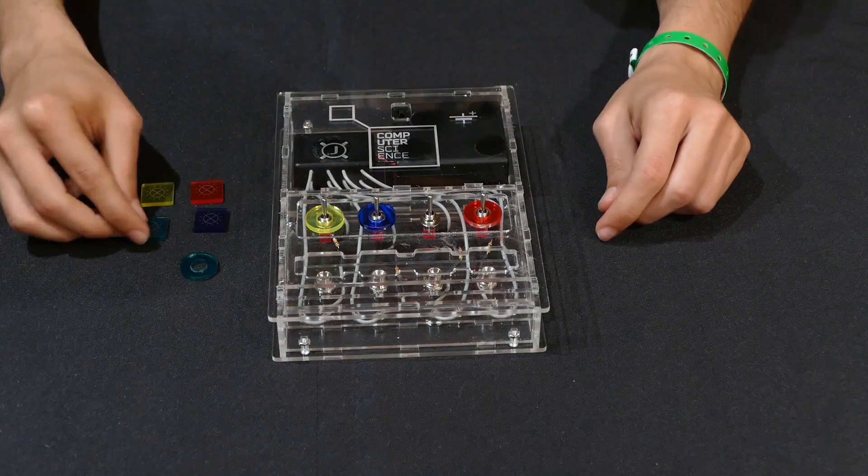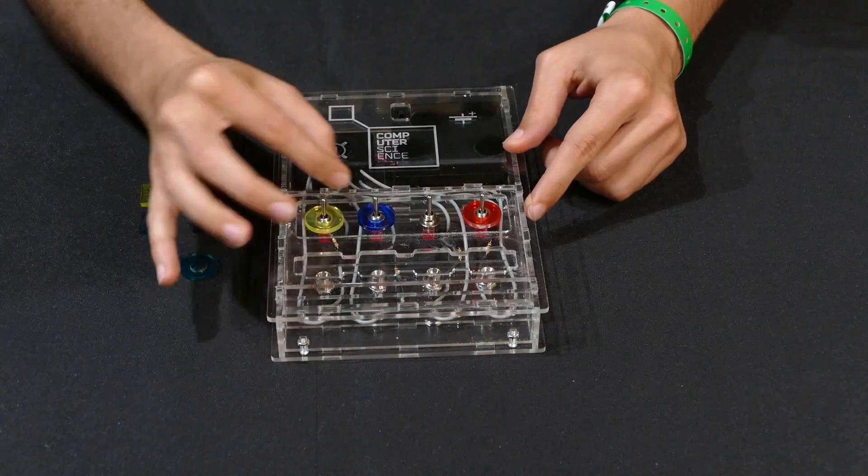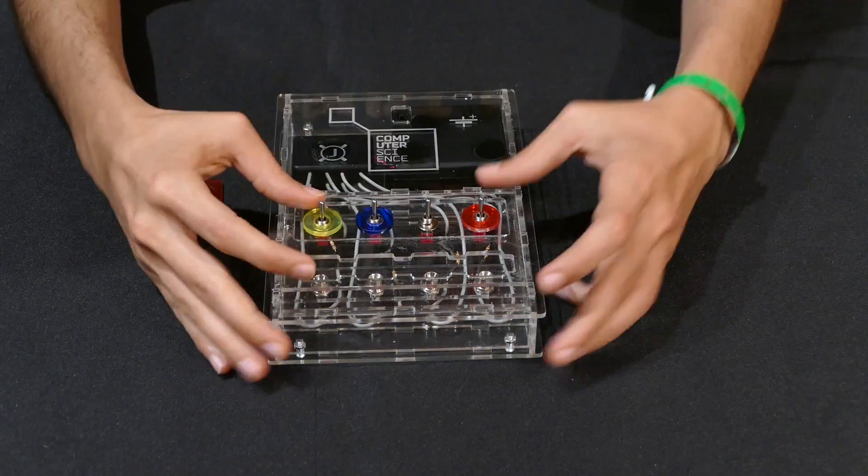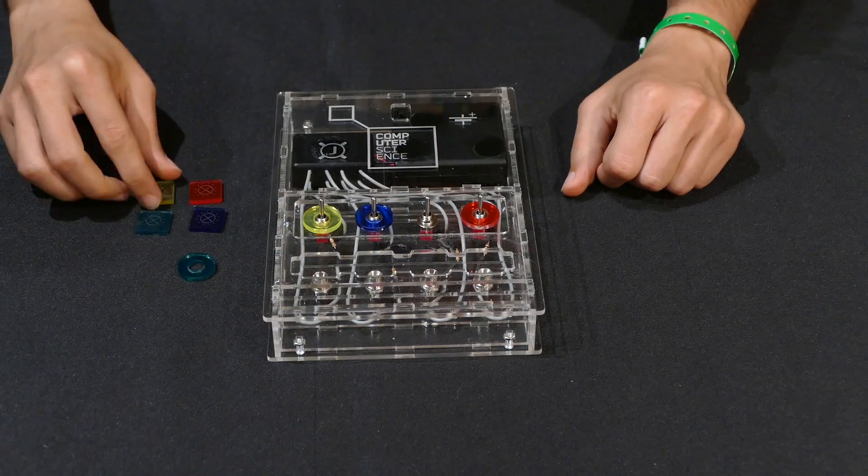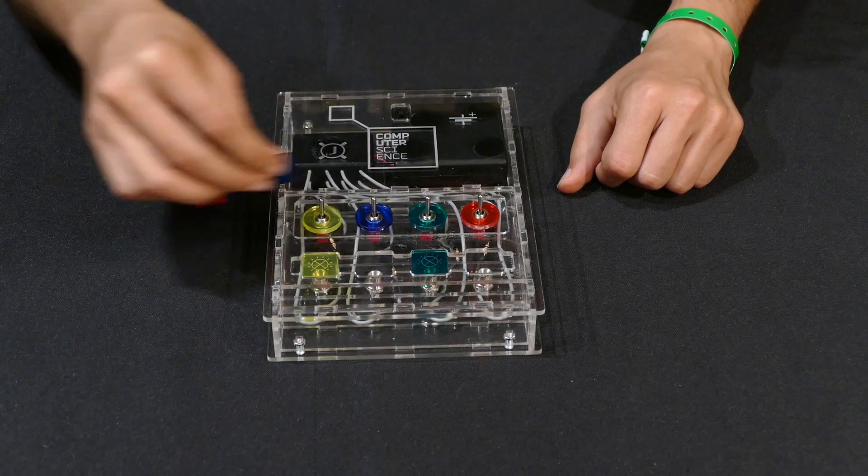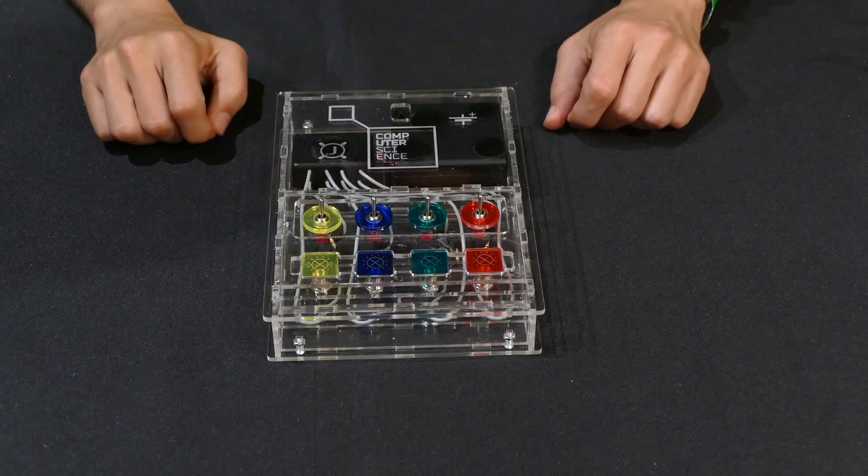And if I remove the color from all the lights, the colorless switch will power the four lights. Finally I put everything back together again and each switch will power the matching light in front of it.